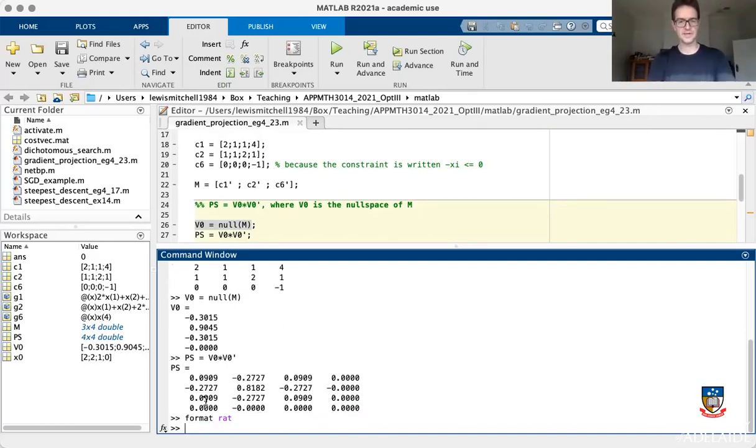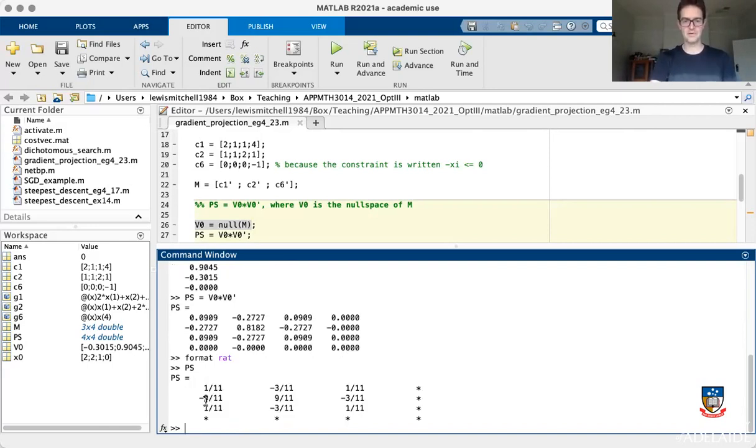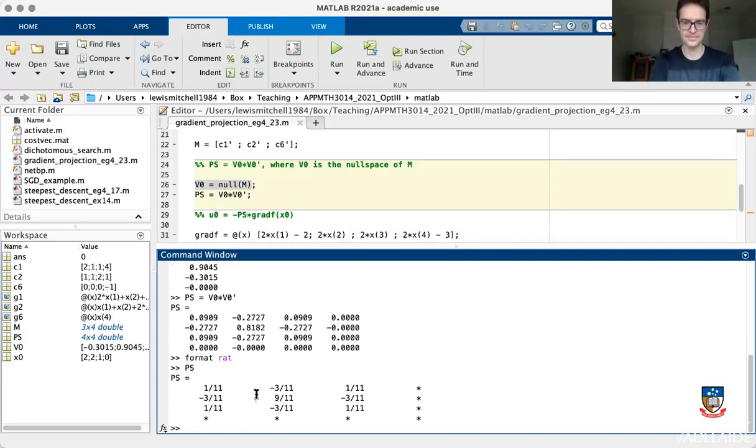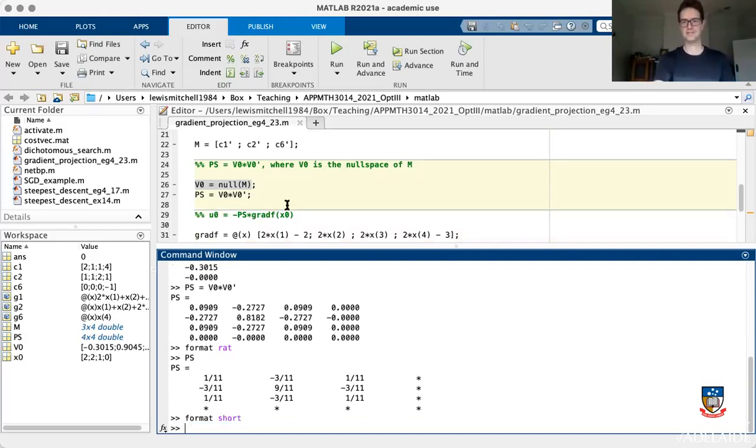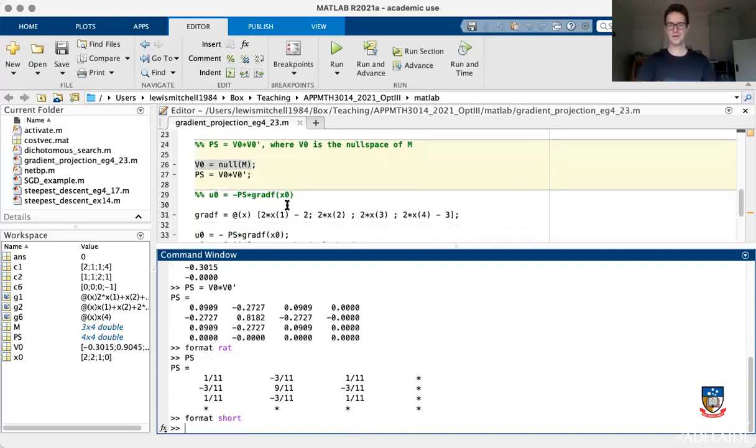You get a matrix here with numbers in it. And it turns out these are actually sort of nice numbers. If we use the rational format in MATLAB, then these turns out to be, the entries in PS turn out to have fractions of 11. It turns out to be multiples of one over 11. So cool. Let's actually get out of, let's go back to decimal format because that freaks me out too much.